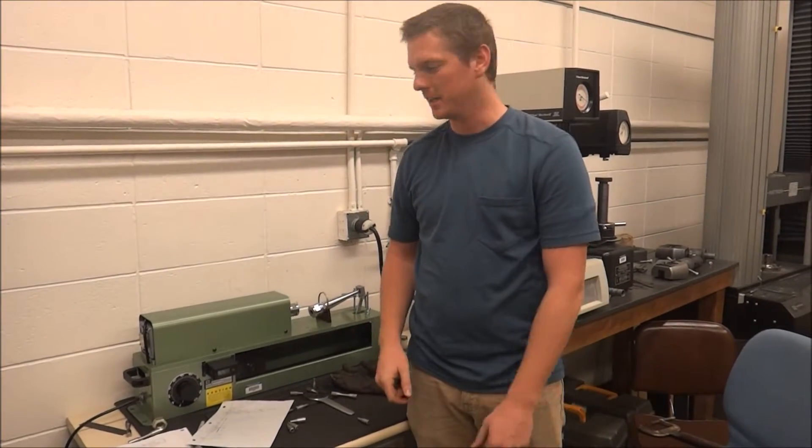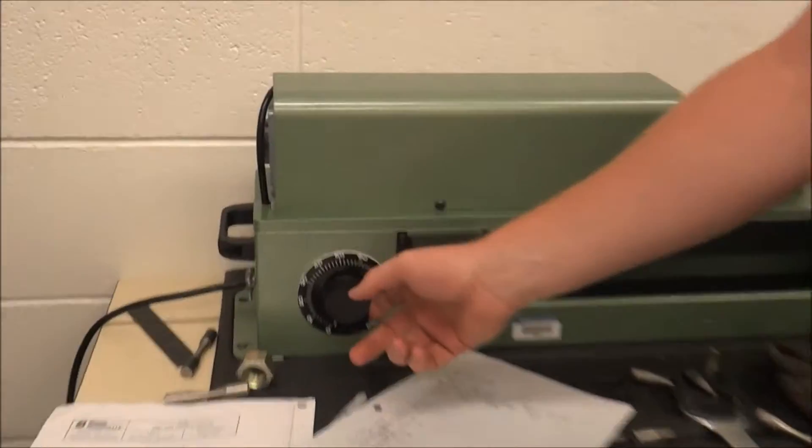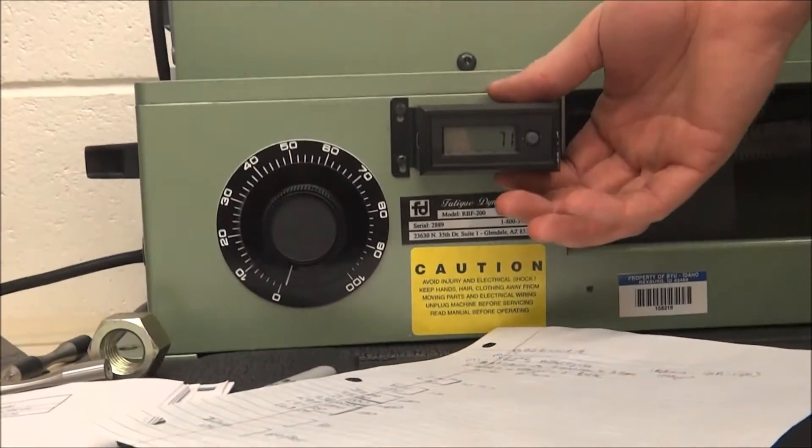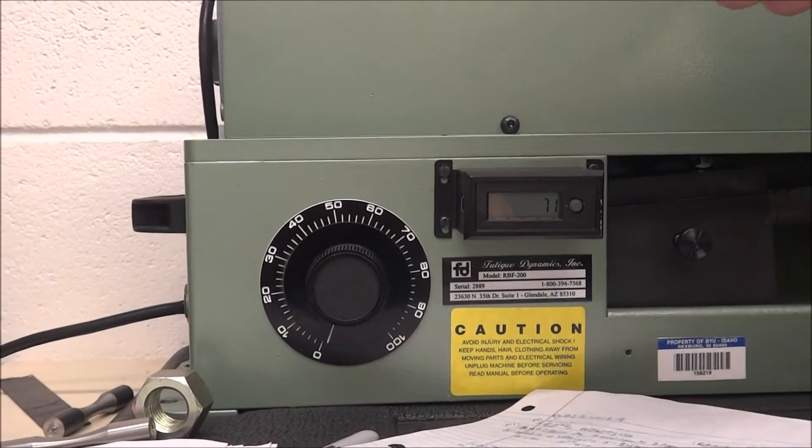There's a couple of different components to this machine. Here we have the dial that controls the RPM, and then here we have where it will count your number of cycles to failure, and it's got a 1 to 100 ratio.